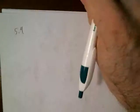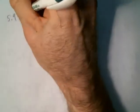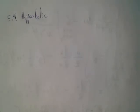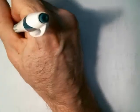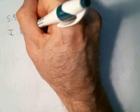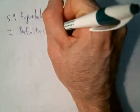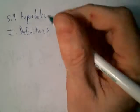Section 5.9: we go into hyperbolic functions. What are they? They're just sums and differences of exponential functions, and so we can define each one of them in terms of exponentials.